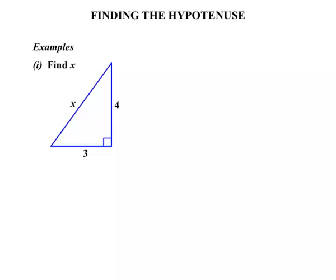We're asked to find x. Now we can see that x is the longest side in this right-angled triangle. It's the hypotenuse. So we start by saying x squared equals, and the two shorter sides are 4 and 3. So we write that it equals 4 squared plus 3 squared.